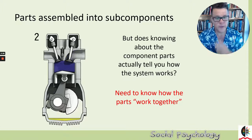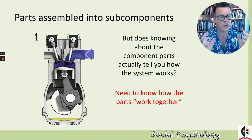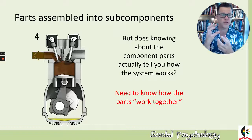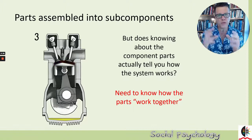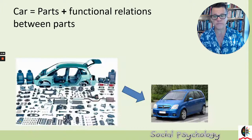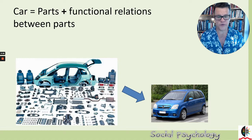The same thing applies to the kinds of explanations we want to develop in social psychology. We need to know the components and their design, but does knowing about the component parts actually tell you how the system works? No — we need to know how those components fit together and how they work together to form functional units. How do humans work? What are the different parts, how do they fit together, and how do they work together to produce outcomes like prejudice?